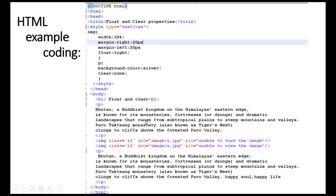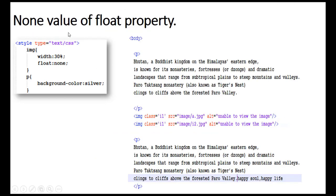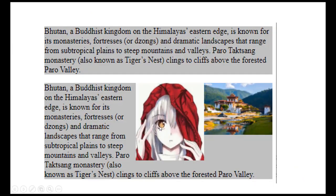The first value is none. The float property value none means default, as I said earlier. When you use this value, there will be no effect on the position of the element — it does not float. This is the output when using the none value: by default, the image is wrapped inside the two paragraphs.